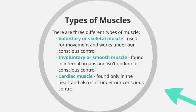We then have what we call involuntary or smooth muscle, which is found in internal organs such as the liver and the kidneys. This isn't under our conscious control — it works automatically and we don't have to think about it in order for it to work.